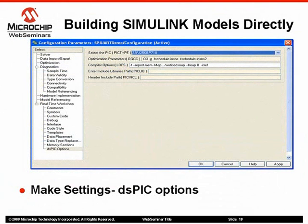Here we have a view of the DSPIC Options pane of the Real-Time Workshop configuration window. This pane appears only if you have chosen dspic33f.tlc as the system target file, and these settings are effective only if you build Simulink models without using the MATLAB plugin. Select the PIC — select the target DSPIC device here; the default is DSPIC33FJ256GP710. For Optimization Parameters, you can enter optimization switches here, or leave them at the default if you are not sure what to use.